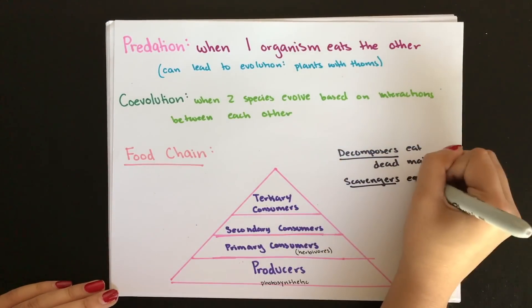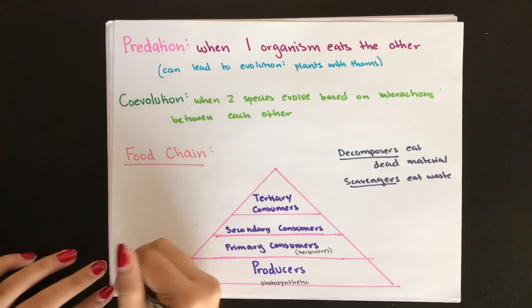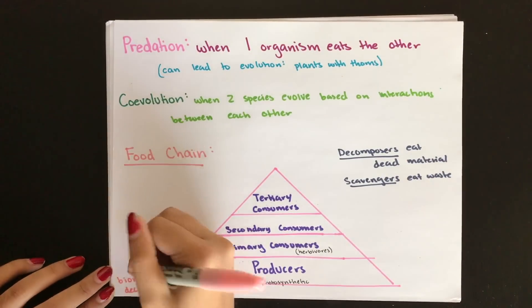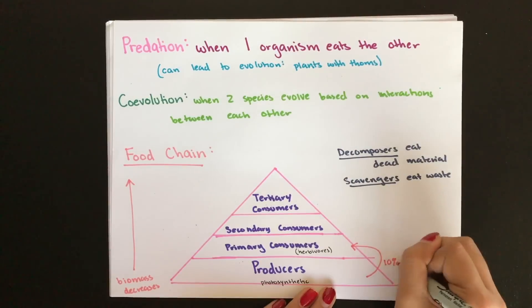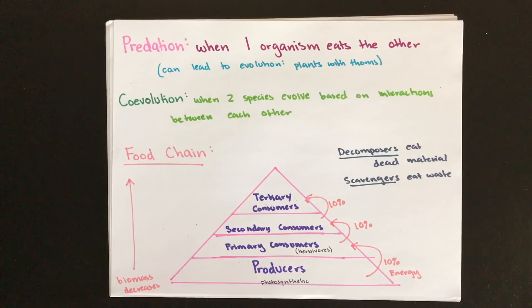Scavengers eat waste and remains of dead organisms. Remember, there is more biomass, more organisms, and more energy as you go down the food pyramid. This relates to the 10% rule: only 10% of energy is transferred from one level to the next, while the other 90% is used to power the consuming organism.